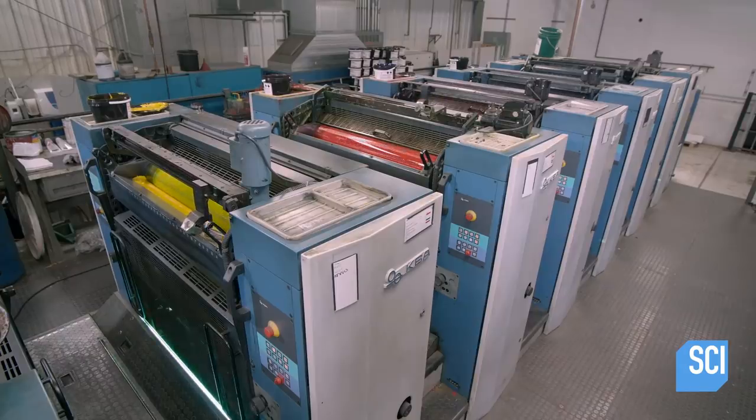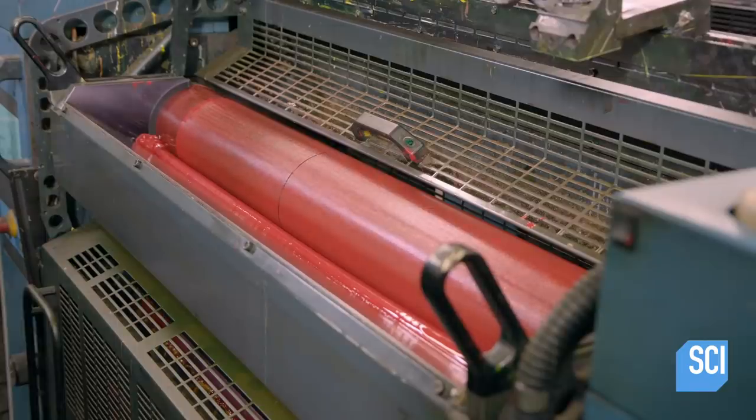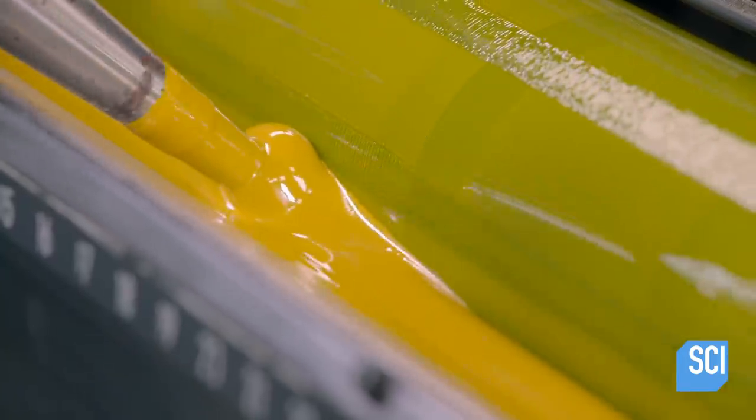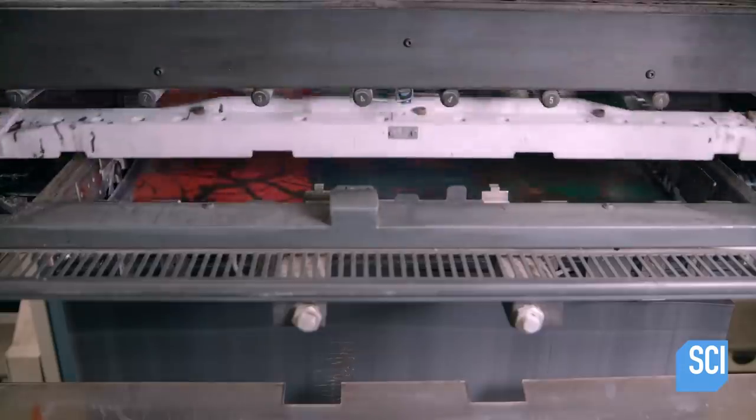Rotating cylinders transfer ink from the printing plates to the sheets, one color at a time. This system prints several different 3D cup images on each lenticular plastic sheet. The press ejects and stacks the printed sheets.